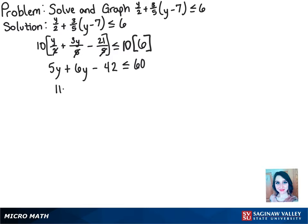Now we can combine the like terms. So we have 11y minus 42 is less than or equal to 60, and we can add 42 to both sides so that 11y is alone.